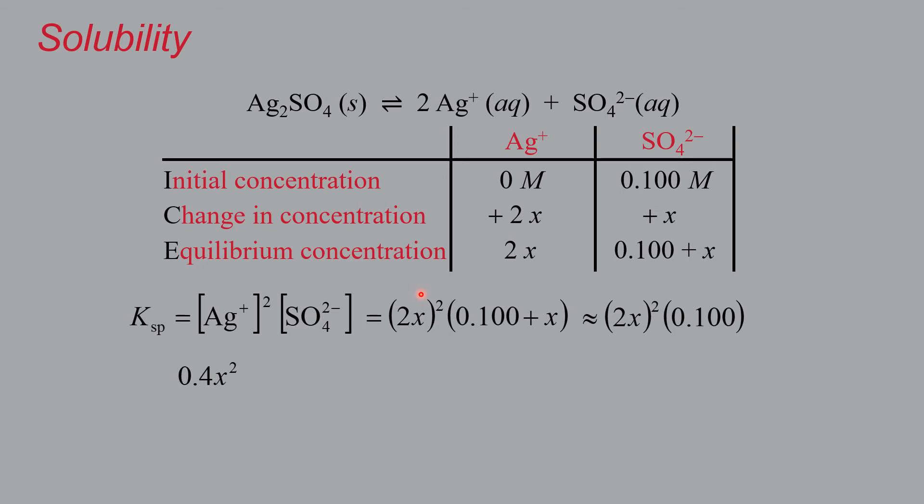So that means that 0.4X squared is equal to Ksp, 1.5 times 10 to the negative 5. That gives us an X of 6.1 times 10 to the negative 3 molar.